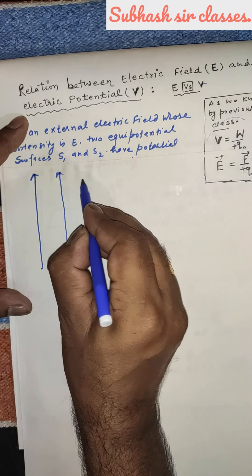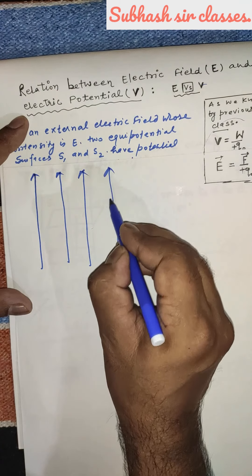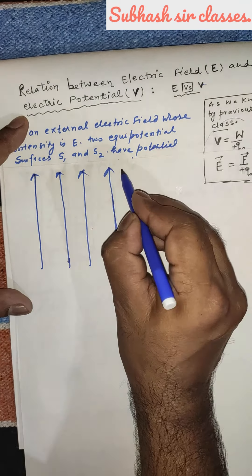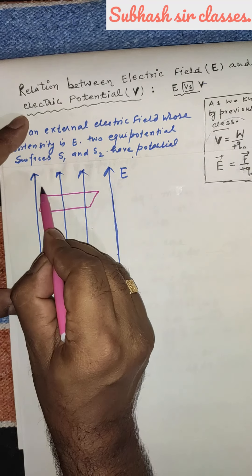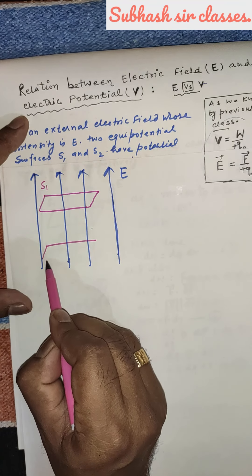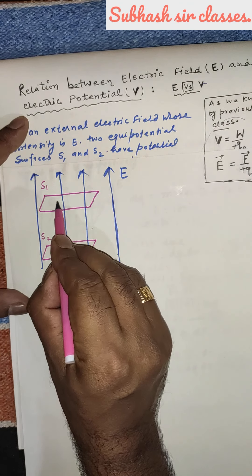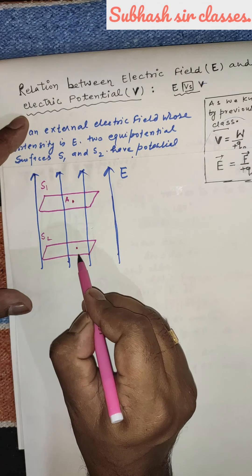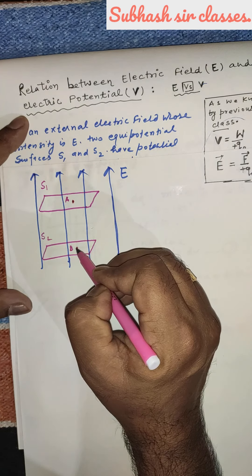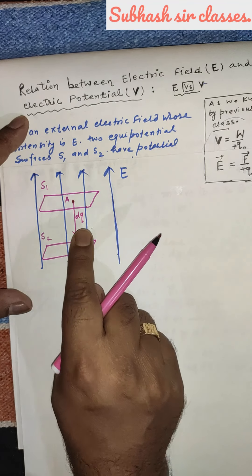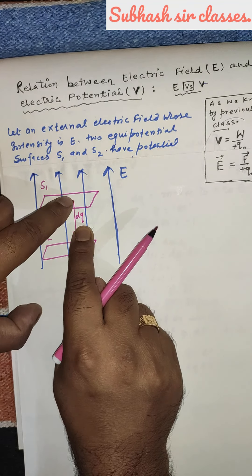This is an external electric field whose intensity is given by E. In this electric field, we can draw two equipotential surfaces: surface S1 and surface S2. On surface S1, there is a point A, and on surface S2, there is a point B. We have a small charge DQ which will be displaced from point A to point B — from surface S1 to S2 — over a displacement DR.